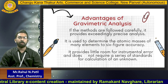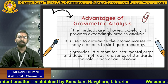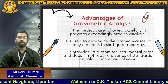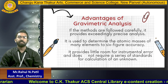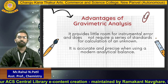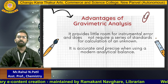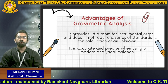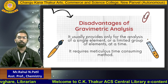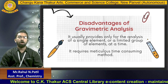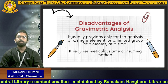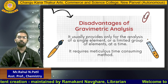Advantages of gravimetric analysis: if the methods are followed carefully, it provides exceedingly precise analysis with good results. It is used to determine the atomic masses of many elements to six-figure accuracy. It provides little room for instrumental error and does not require a series of standards for calculation of an unknown. It is accurate and precise when using a modern analytical balance. Disadvantages: it usually provides analysis of only a single element or a limited group of elements at a time, and it requires a meticulous, time-consuming method.